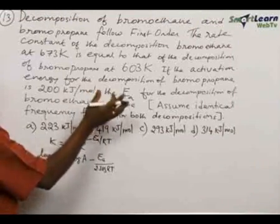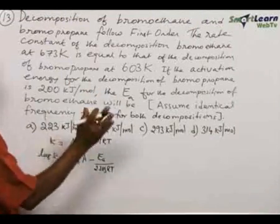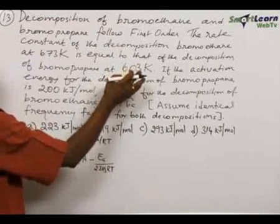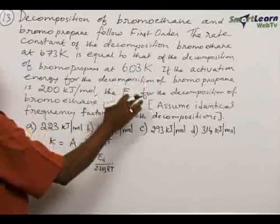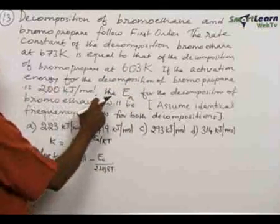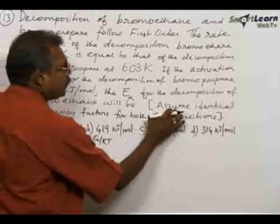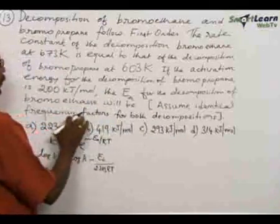Rate constants for both decompositions are equal at two different temperatures for the decomposition of bromoethane and bromopropane. One activation energy is given, the other to be found out. And here we have to assume identical frequency factors also.